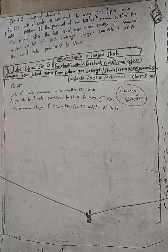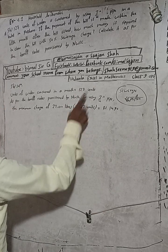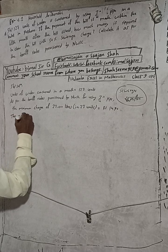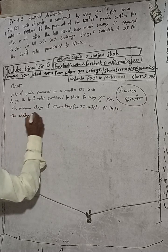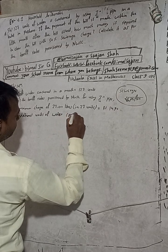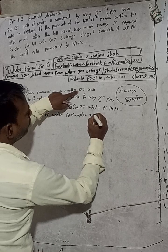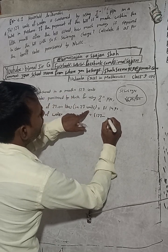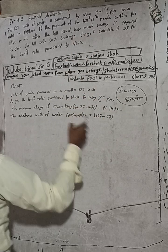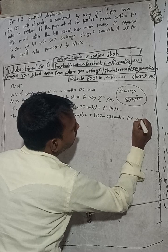The additional units of water consumption is equal to 127 minus 27 — because the charge is different for the first 27 units and for extra additional units. So we have to find additional units of water consumption, which is 127 minus 27 equals 100 units.